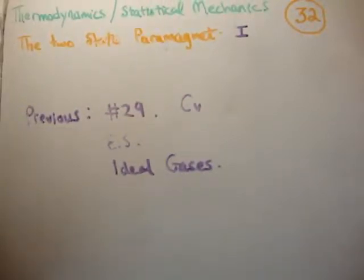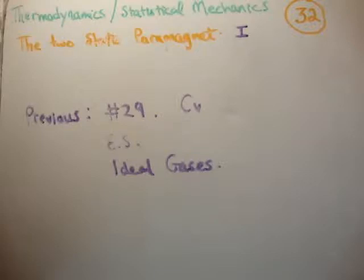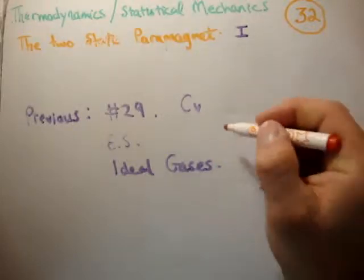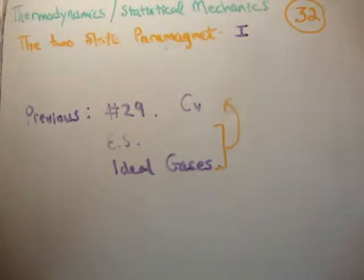In this video I'm going to continue with my tutorials on thermodynamics and statistical mechanics. This is video number 32 and I'm going to begin a series of sub-videos on the two-state paramagnet. The previous video is number 29 where I discussed the heat capacity at constant volume. We're going to do that exact same process this time applied to a two-state paramagnet because the system is more complicated.